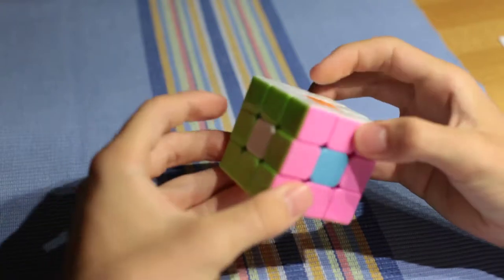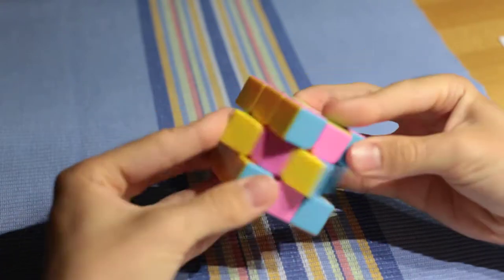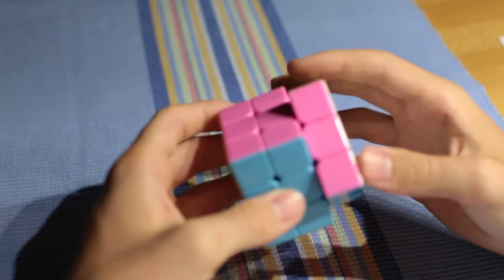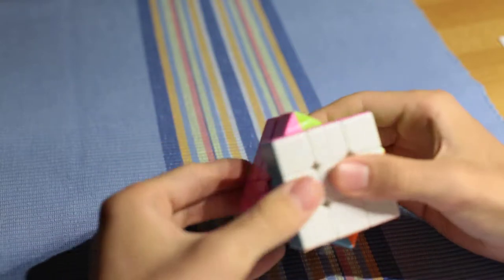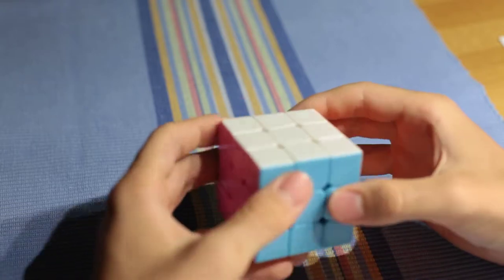The middle pieces are connected to the core of the mechanism and they are in the center of each side. They have only one color but can be rotated in four positions. These middle pieces clench the edge pieces between themselves, thus holding them in place.